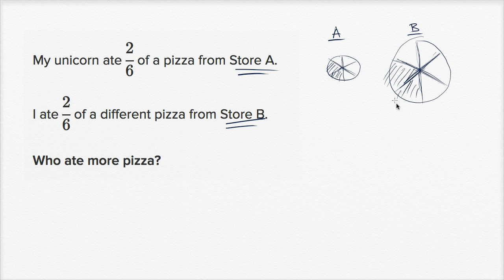And so if store B's pizza is bigger than store A's pizza, then I would have eaten more pizza than my unicorn. But it might have been the other way around. Maybe store B's pizza's like this and store A's pizza's like this. And if this was the case, if my unicorn ate this two-sixth, then the unicorn ate more.